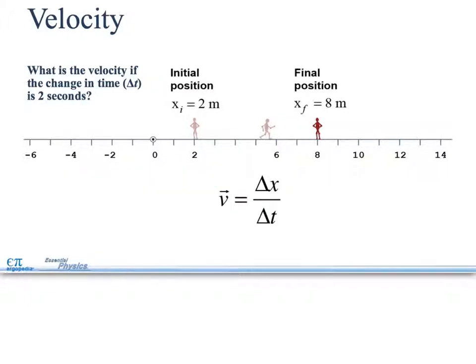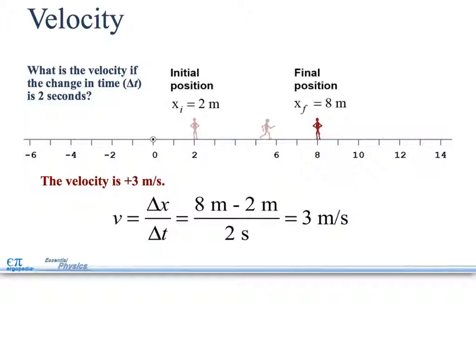What is the velocity if the change in time is 2 seconds? Well, it says that xf is the final minus the initial, so 8 minus 2, and it happened in 2 seconds. So, you have 8 minus 2 is 6, 6 divided by 2 is 3 meters per second.